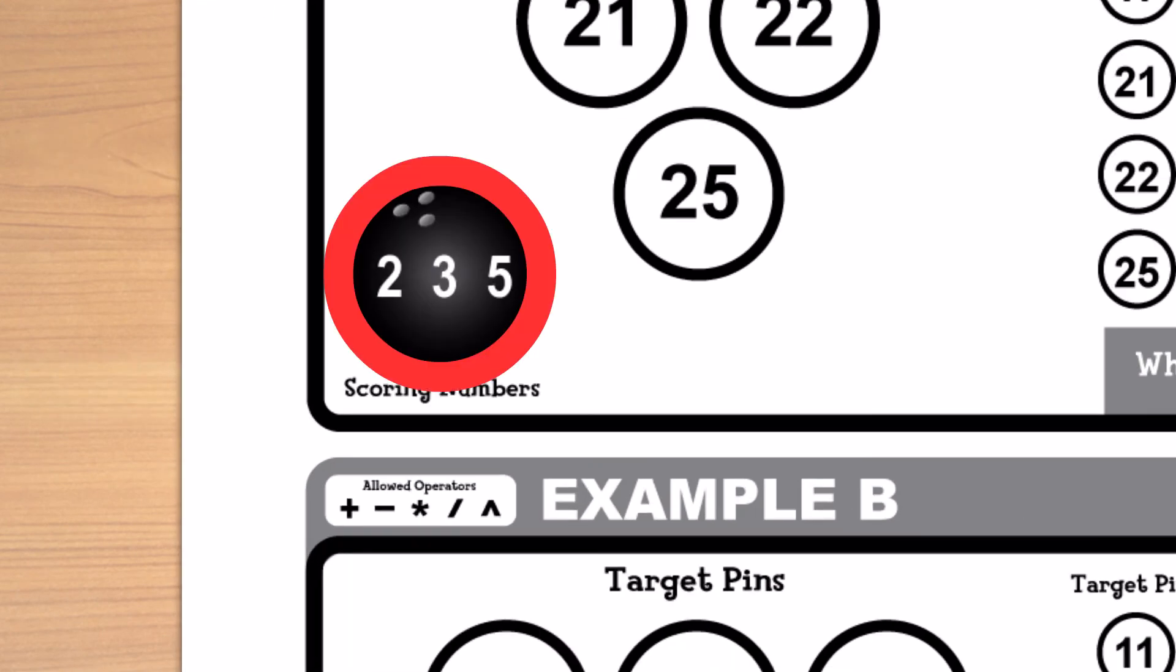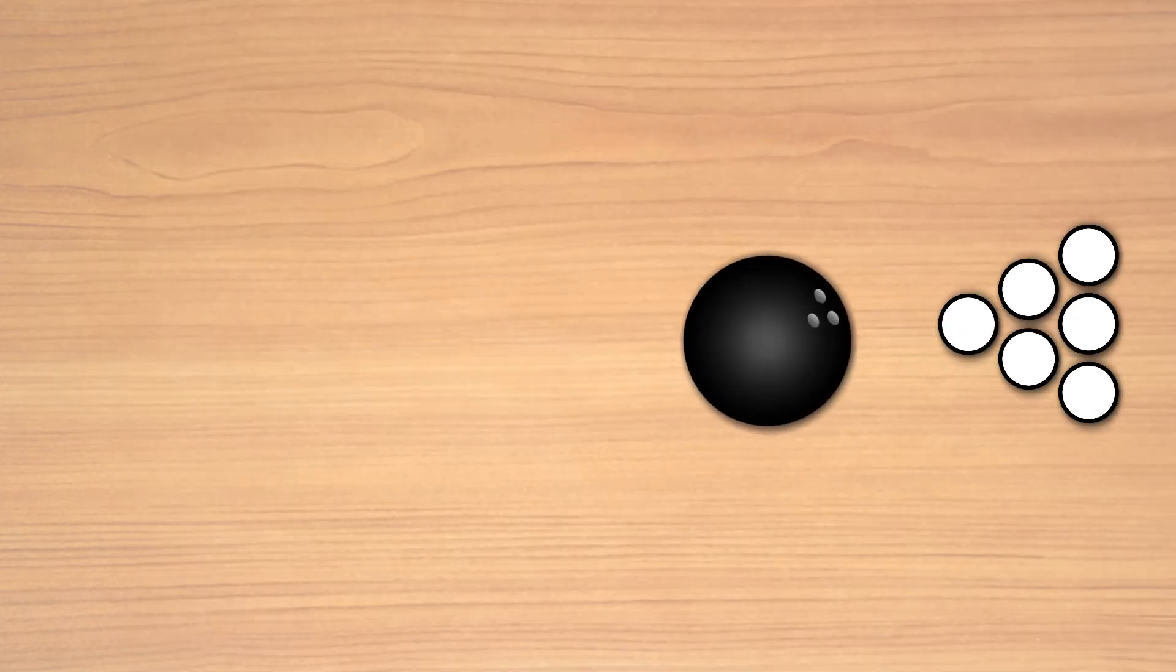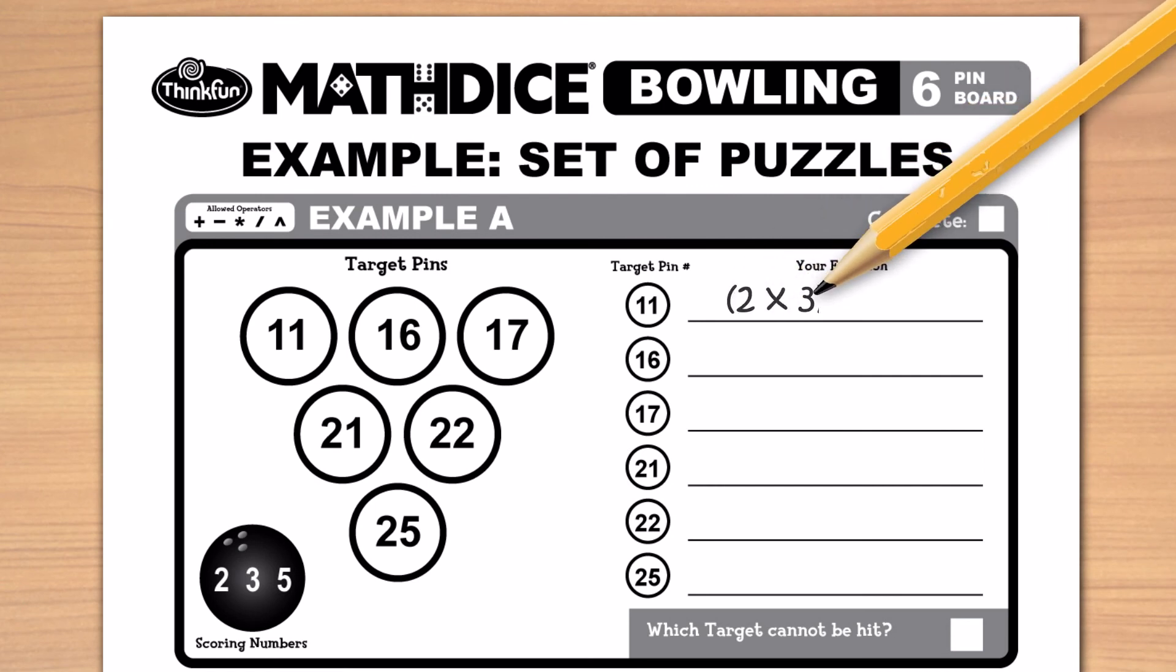The scoring ball contains three scoring numbers which you must use to try and hit the six target pins. There will always be one pin that you cannot hit. Use math expressions to hit the target pins, like so.